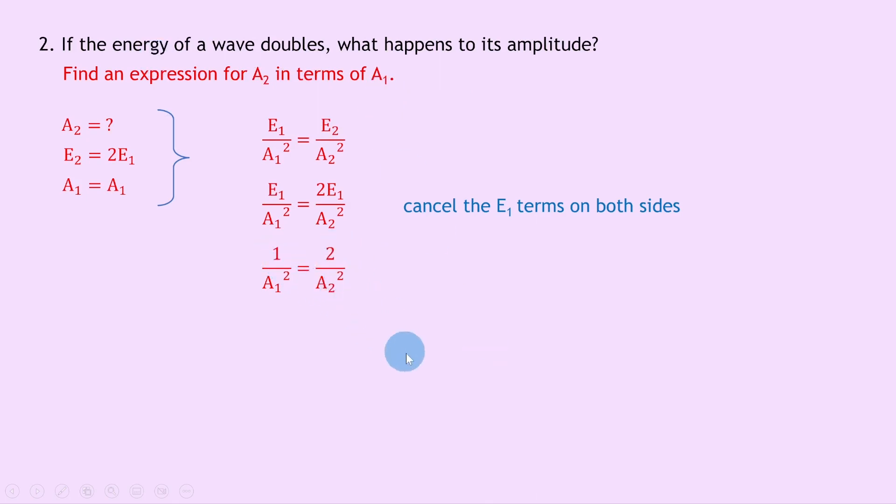So we've got one times A₂ squared gives me A₂ squared, and that's equal to two times A₁ squared. So we get A₂ squared is equal to 2A₁ squared. And then we want A₂ on its own, not A₂ squared, so if we take the square root of both sides we get A₂ is equal to root 2 times A₁. That is, we've square rooted the A₁ squared as well, which has just come out to A₁.